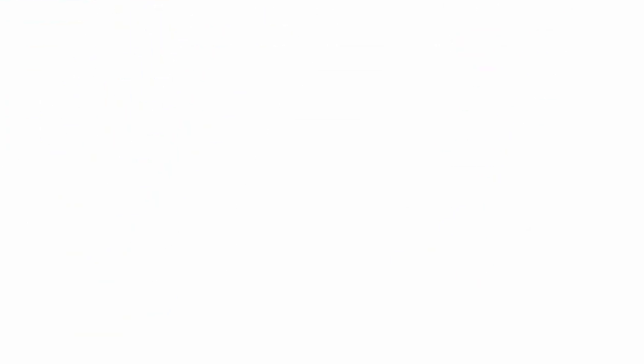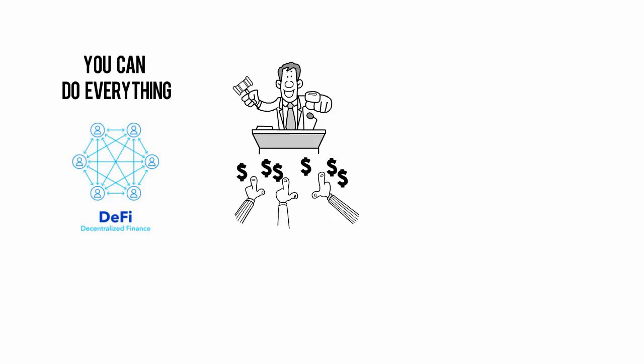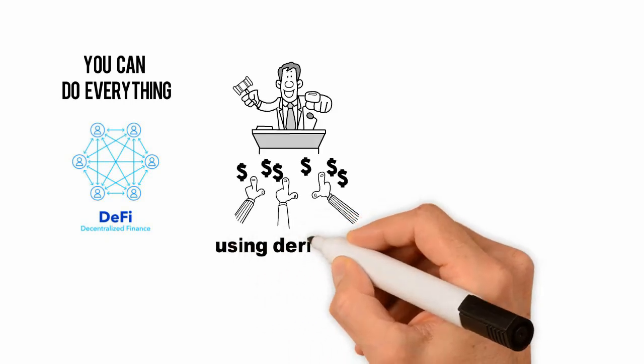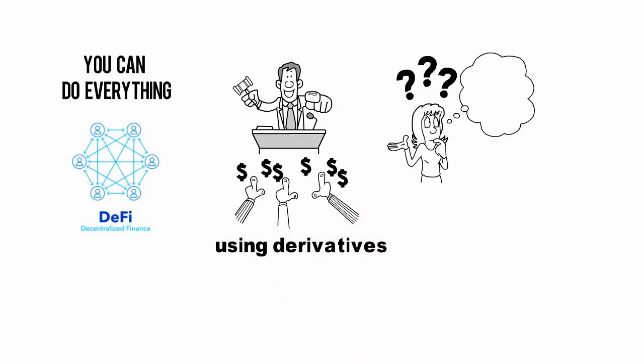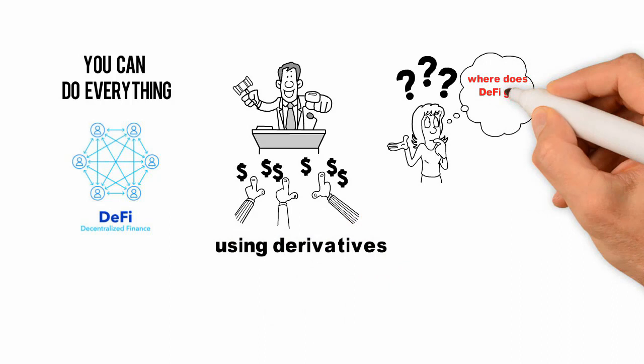Because there's no middleman, the lender gets all the interest. There's also no credit checks, meaning broader access to people who cannot tap into traditional services. Ultimately, with DeFi you can do everything from underwriting debt to gaining investment returns to using derivatives — the limits are endless.